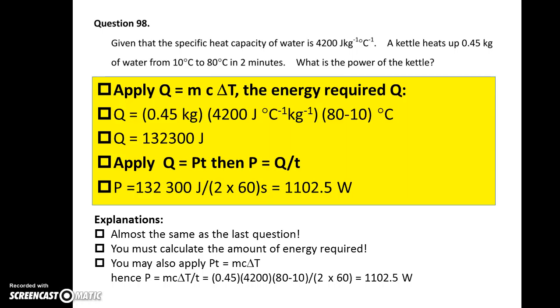Question 98. A kettle heats up 0.45 kg of water to increase its temperature by 70 degrees Celsius in 2 minutes. Find the power of the kettle. Similar to the last question, you have to find the amount of energy absorbed by the water first. And then, using the equation Q equals Pt, where T is the time in seconds, so that you may find the power of the kettle.